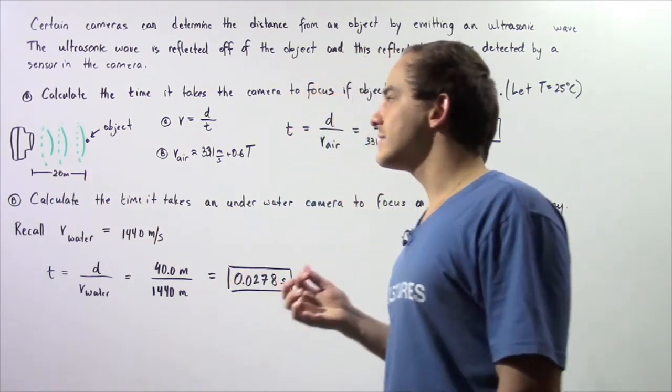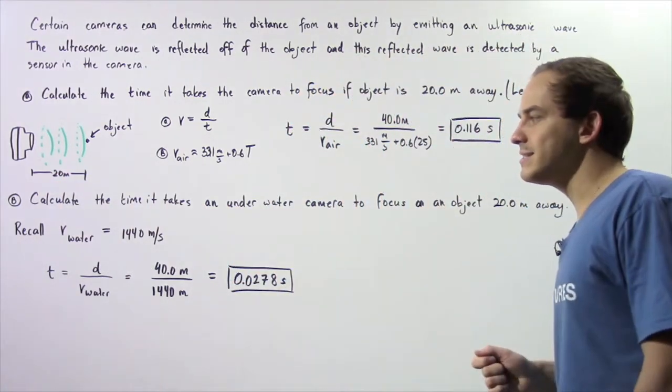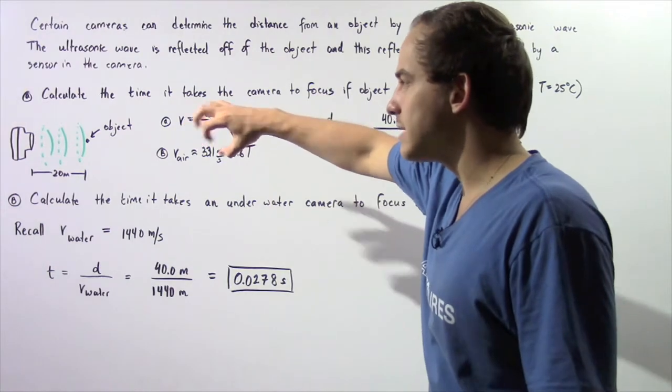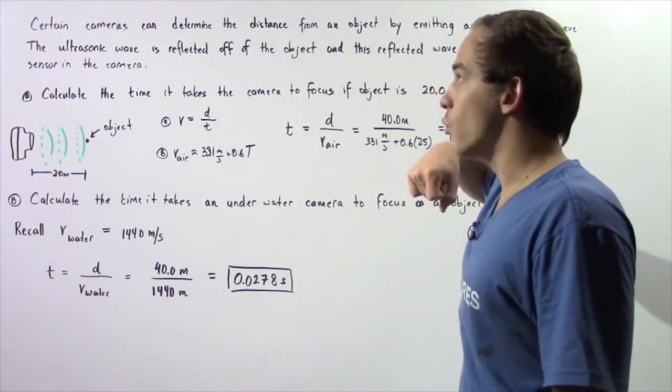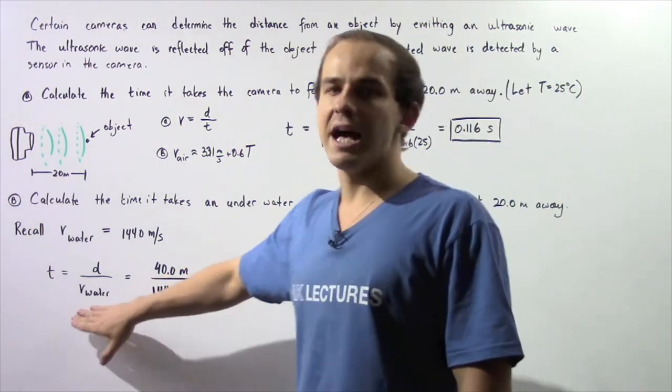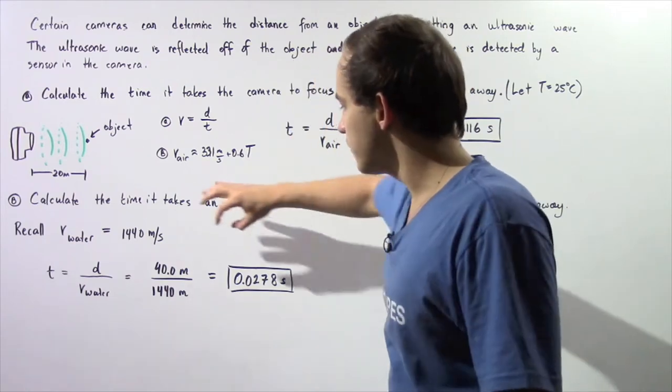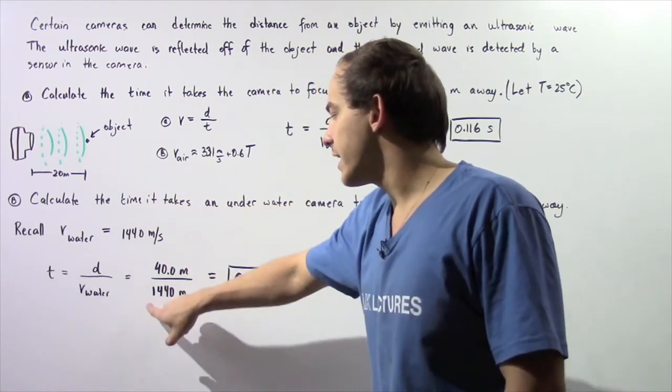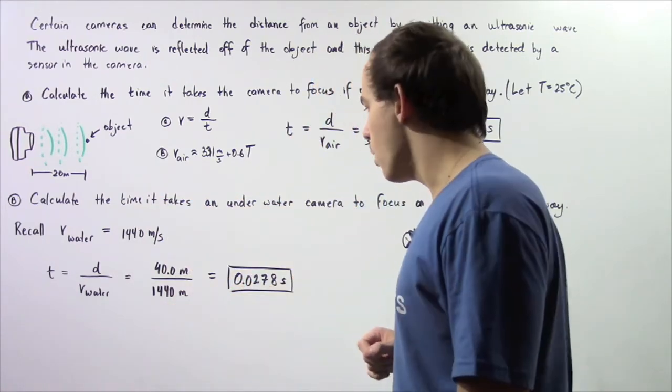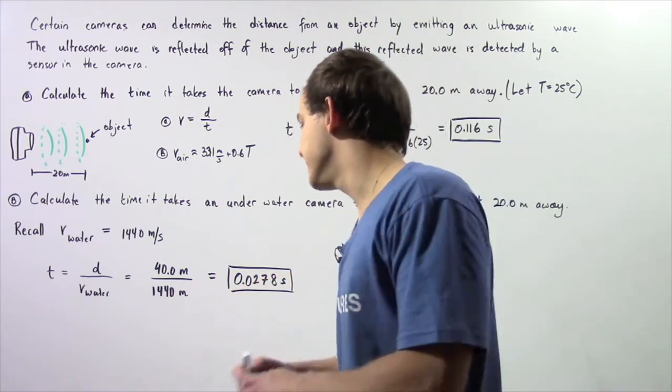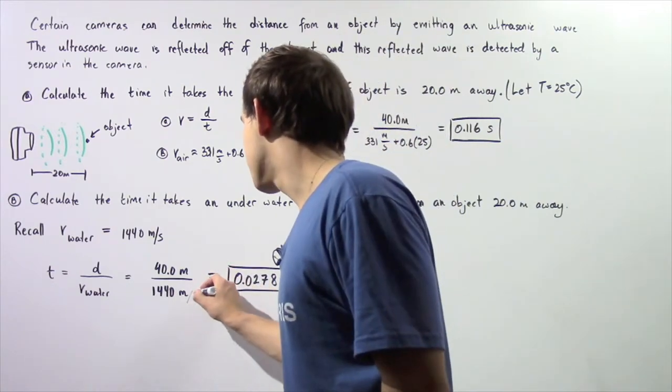The time that it takes our camera to autofocus is equal to the distance our ultrasonic wave travels divided by the velocity of that ultrasonic wave. So 40 meters divided by 1440 meters per second.